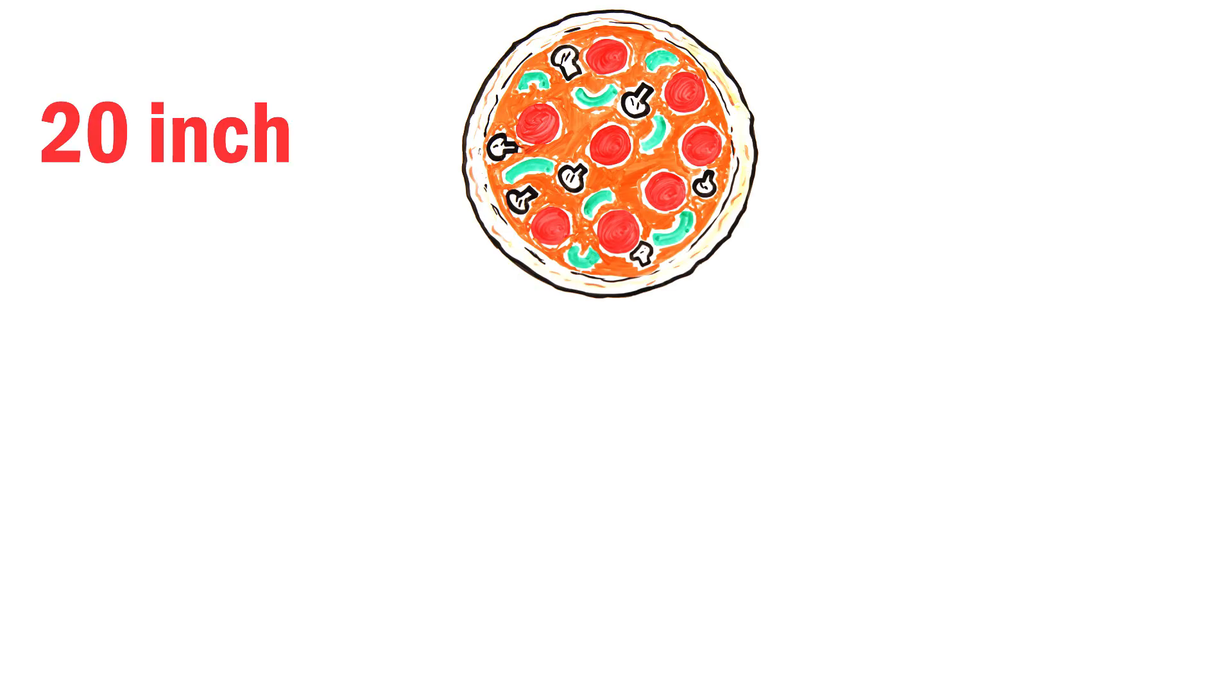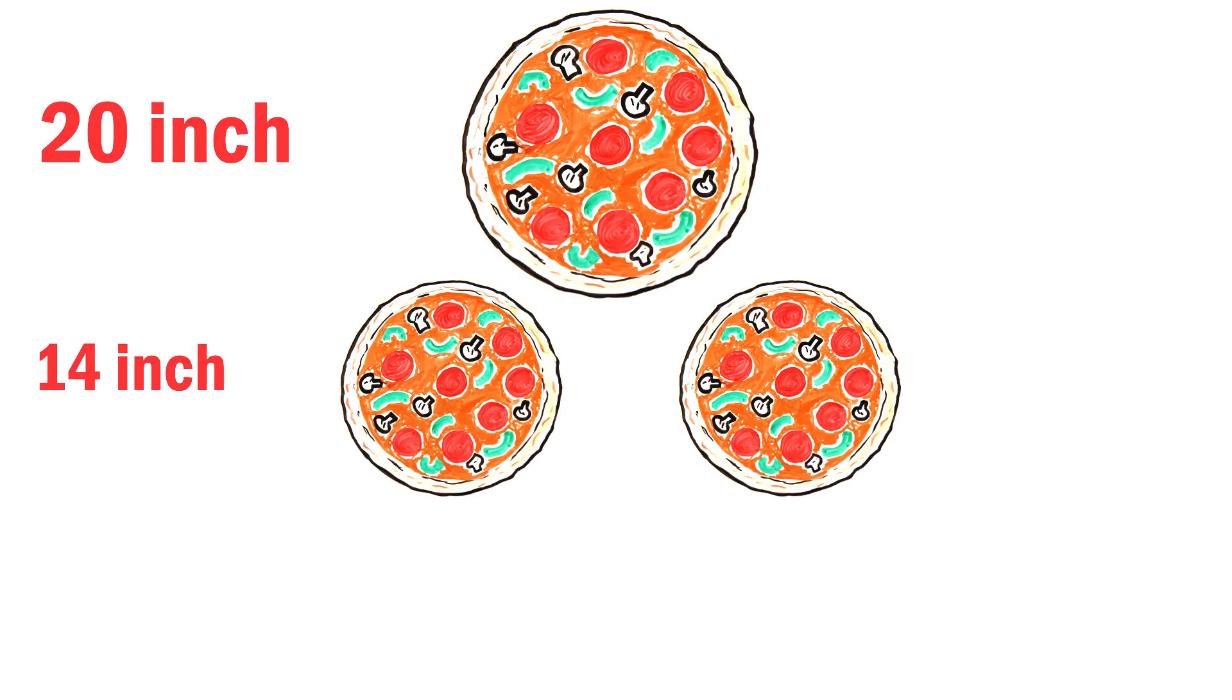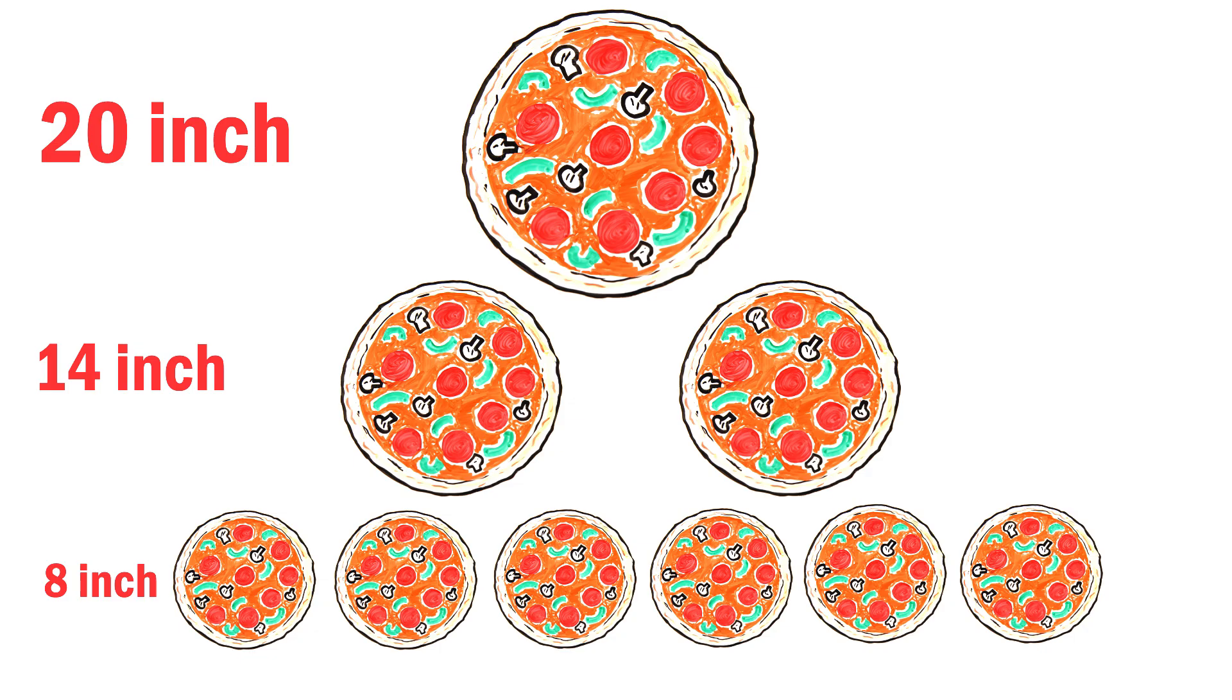For example, a 20 inch pizza has more area than 2 14 inch pizzas, or 6 8 inch pizzas. Yet, it's almost $9 cheaper on average than getting 2 14 inch pizzas, and over $30 cheaper on average than getting 6 8 inch pizzas.